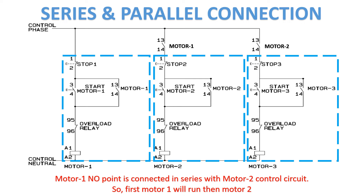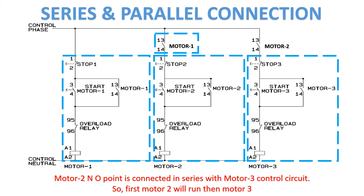Motor 1 NO point is connected in series with the motor 2 control circuit, so first motor 1 will run, then motor 2. Motor 2 NO point is connected in series with the motor 3 control circuit, so first motor 2 will run, then motor 3.